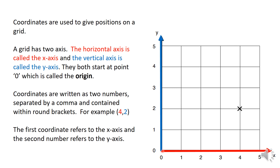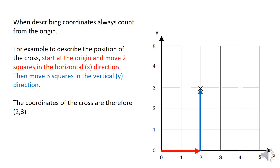For example, take the coordinate (4, 2). The first number refers to the x-axis — so 4 across — and the second number refers to the y-axis — so 2 up. That gives us the point 4, 2 on our grid. Here's another one: remember, we always start from the origin. Going 2 along the x-axis and 3 up the y-axis gives us the coordinate 2, 3.